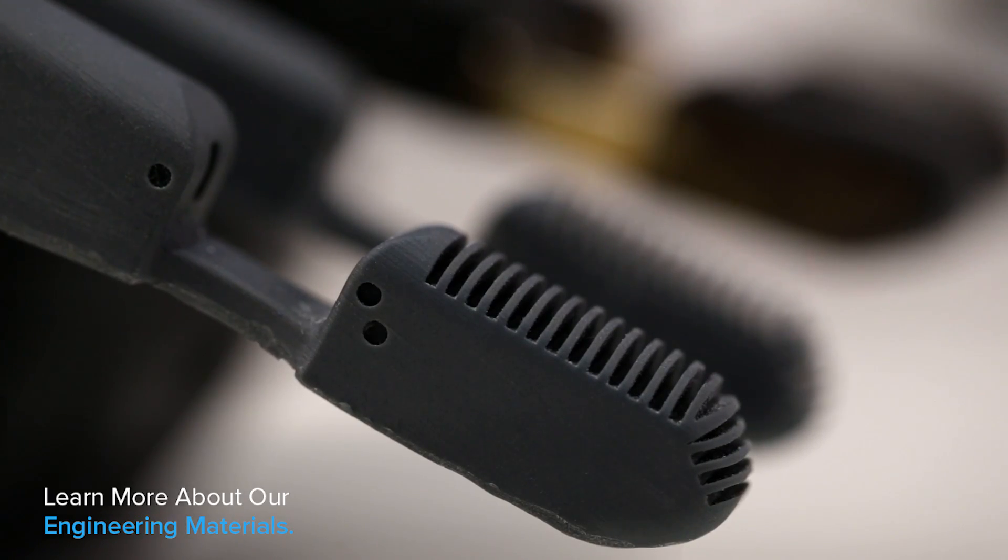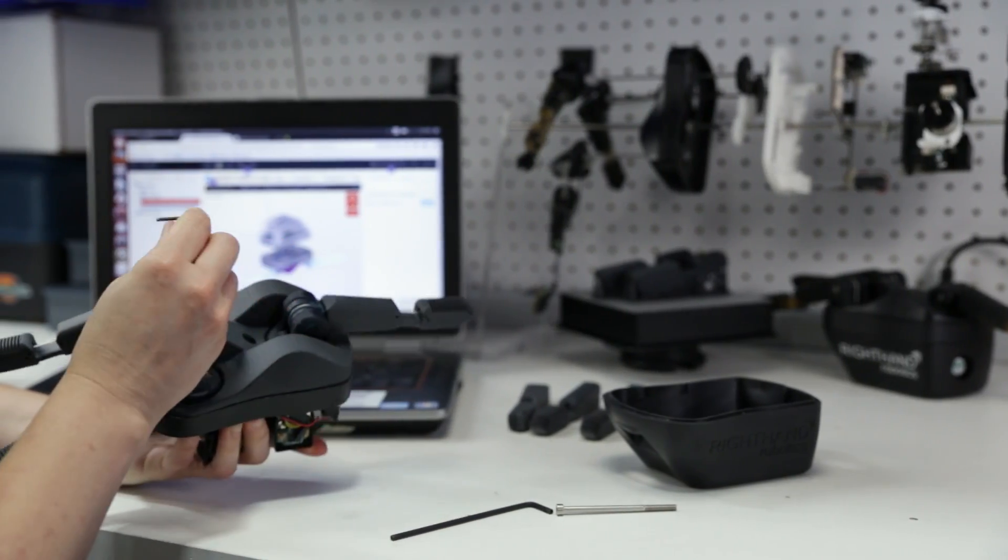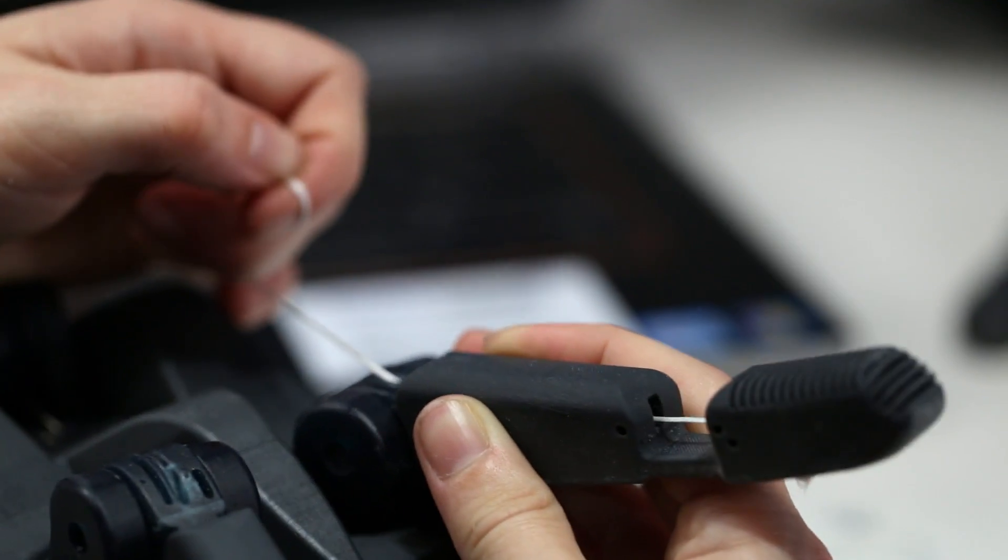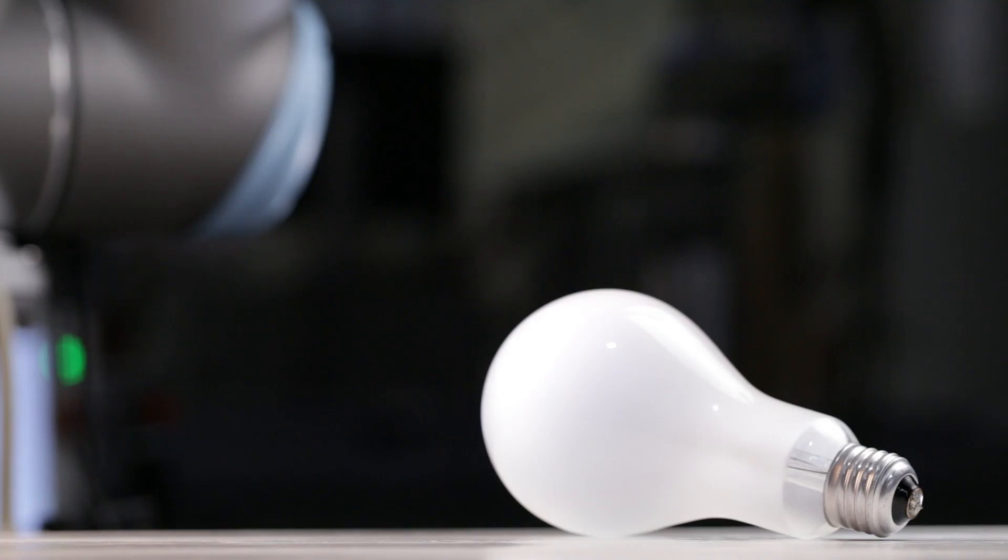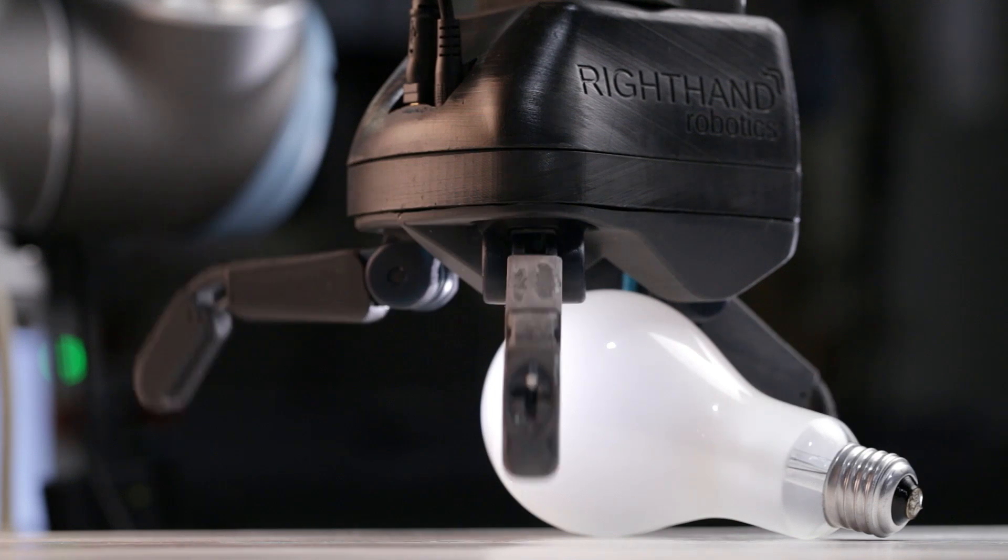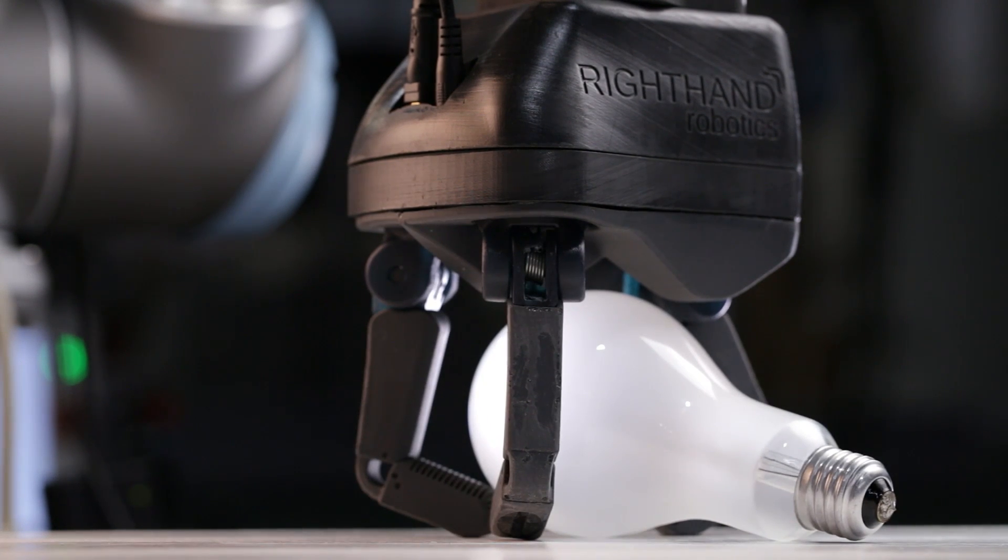We use the Formlabs flexible resin to prototype our fingers. Because our fingers are compliant, there aren't a lot of technologies out there that we can prototype in that mimic that sort of compliance.